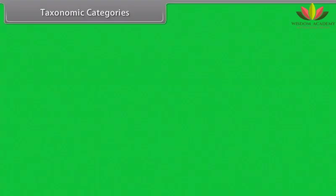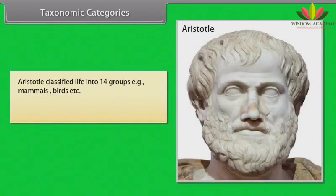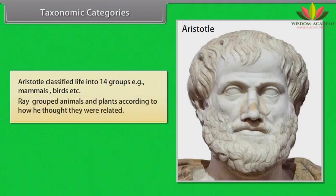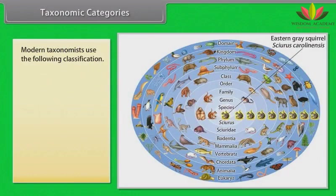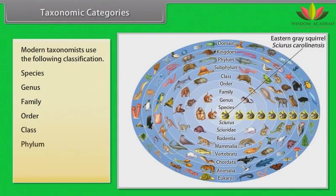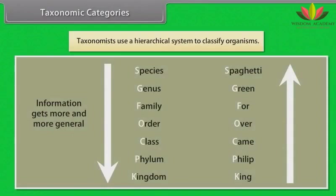Taxonomic categories: Aristotle classified life into 14 groups, for example mammals and birds. Ray grouped animals and plants according to how he thought they were related. Modern taxonomists use the following classification hierarchy: Species, Genus, Family, Order, Class, Phylum, Kingdom, and Domain. Taxonomists use a hierarchical system to classify organisms.